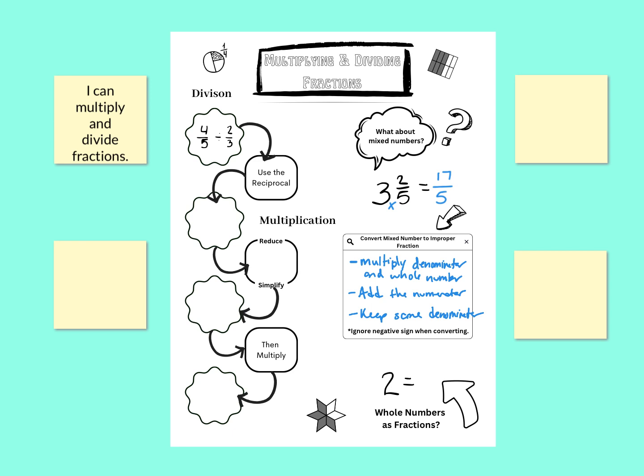And then just a note here. It says ignore negative sign when converting. So if, for example, this had said negative 3 and 2 fifths, I would still have done 5 times 3, not negative 3, but 5 times 3 is 15, plus 2 is 17. And then, now I need to bring that negative over, and that would become negative 17. So when we're converting it, we ignore the negative, but remember to attach that negative when we're done.